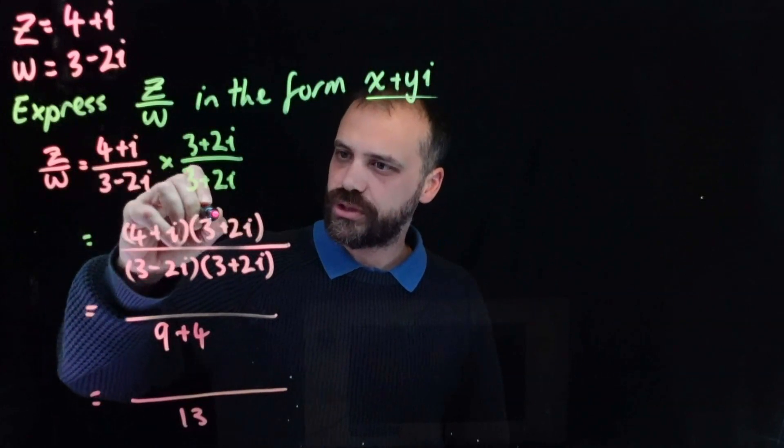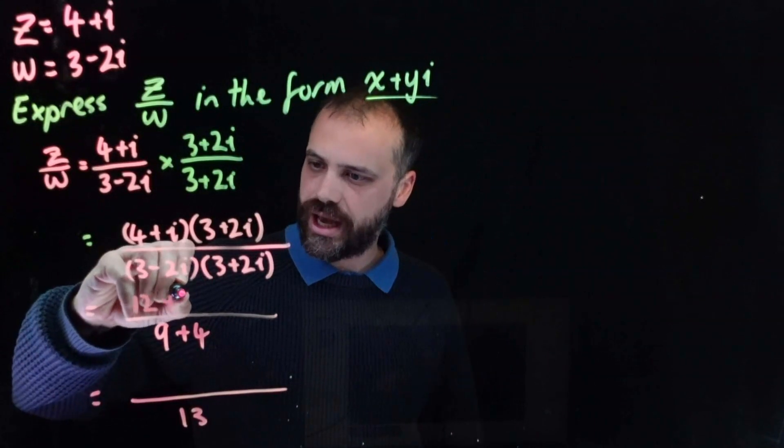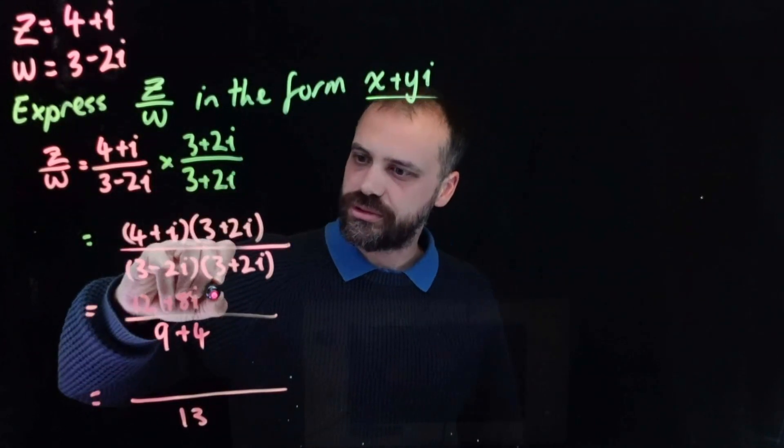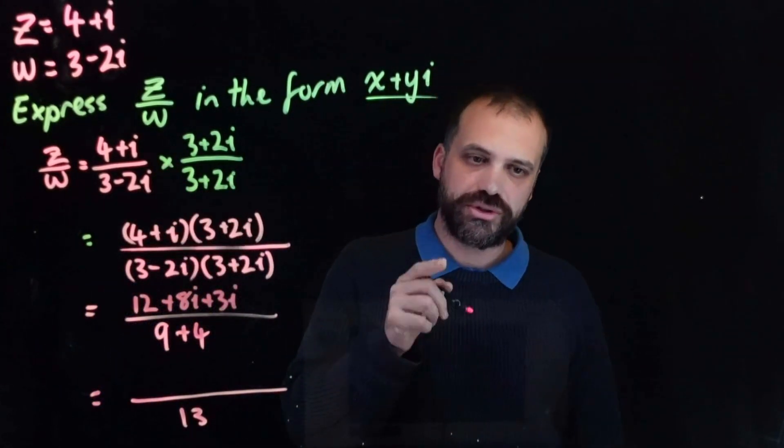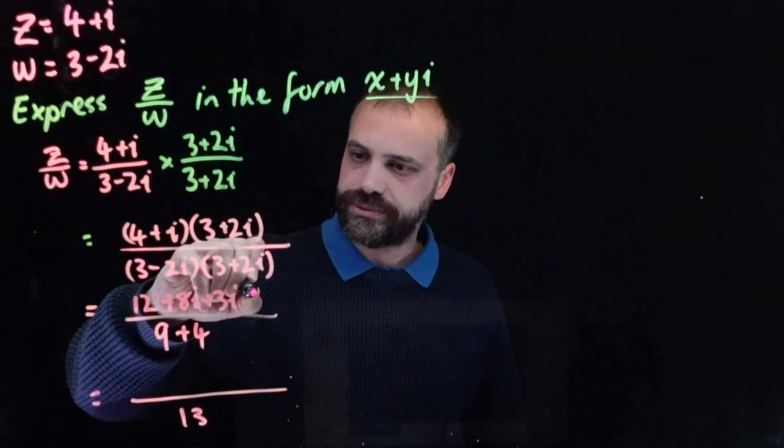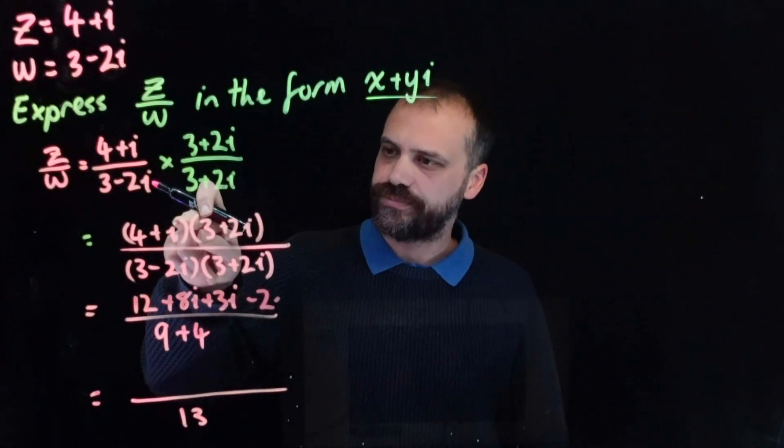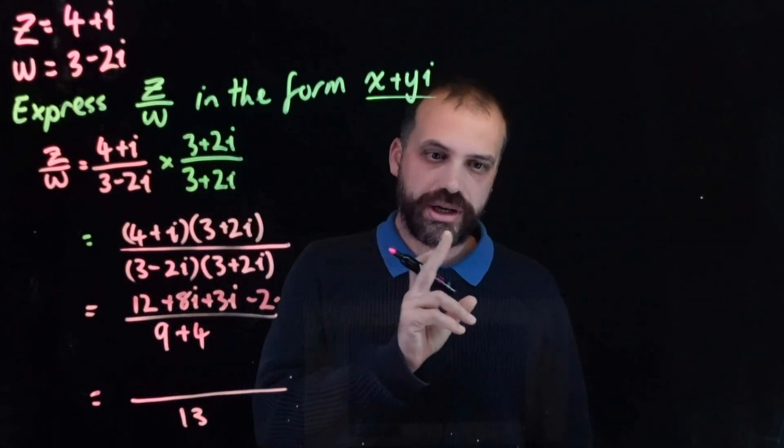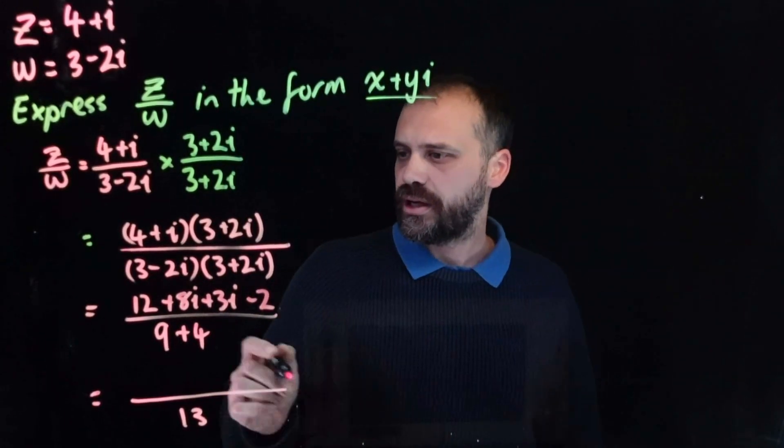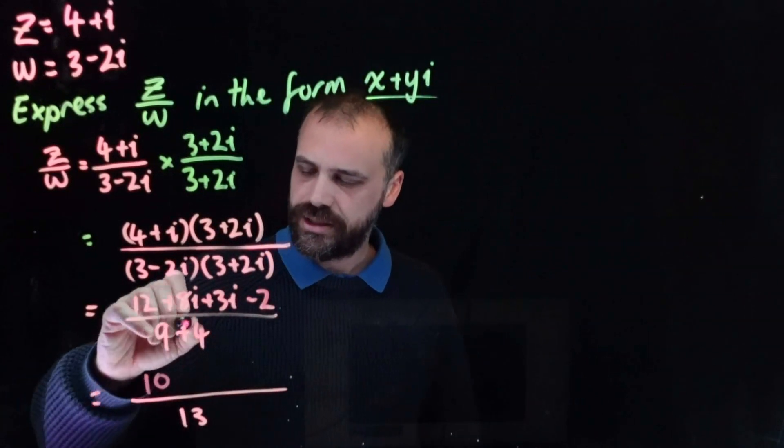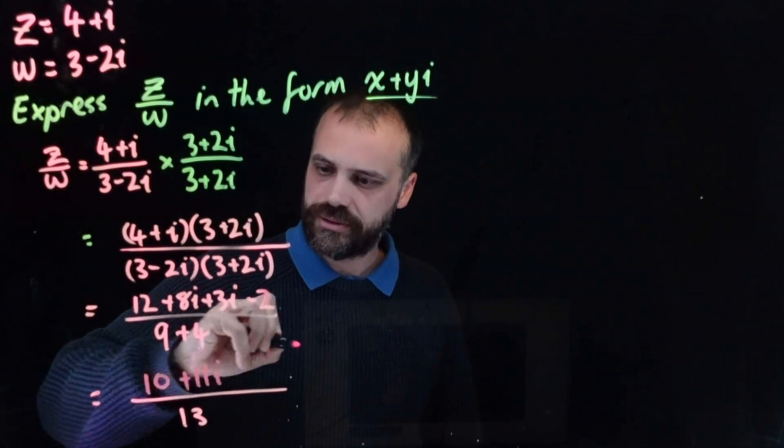Numerator. 4 times 3 is 12. 4 times 2i is 8i. i times 3 is 3i. And i times 2i is 2i squared. So i times 2i is 2i squared, which is 2 times negative 1, which is negative 2. 12 minus 2 is 10, and 8i plus 3i is 11i.